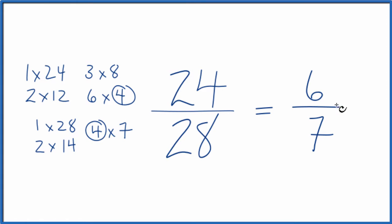These are equivalent fractions. If you divide 6 by 7 or 24 by 28, you'll get the same decimal answer. It's just that we've simplified 24 over 28 down to 6 over 7.